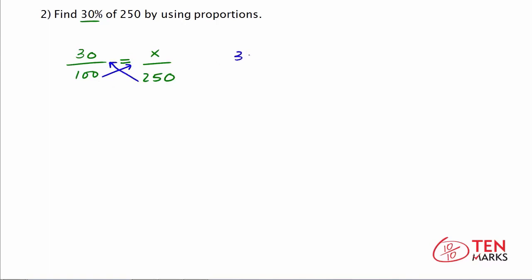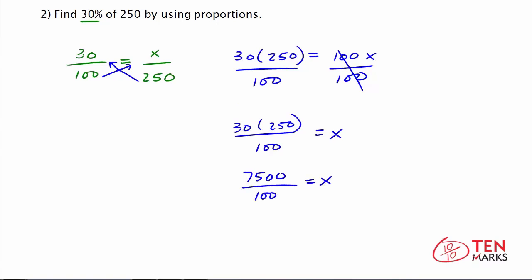You're going to cross multiply. What you get on the left side is 30 times 250 equals 100X. You want to divide both sides of the equation by 100. When you do that to the right side, the 100s cancel out and you're just left with X. You have 30 times 250 over 100 equals X. Simplify the numerator by multiplying. 30 times 250 is 7,500. You have that over 100 equals X. When you divide 7,500 by 100, you are left with 75 equals X. That means that 30% of 250 is 75.